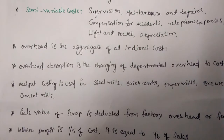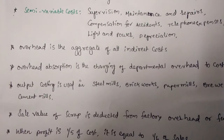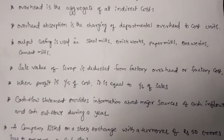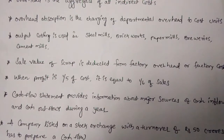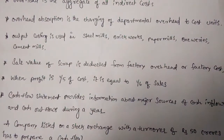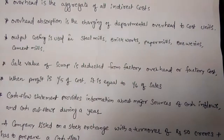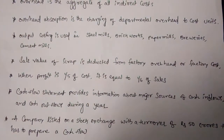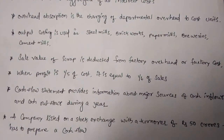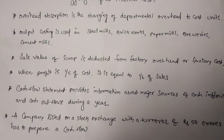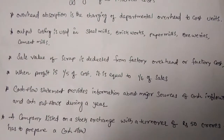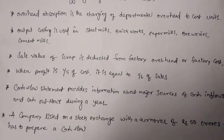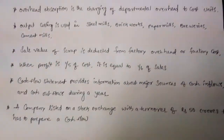Overhead: overhead is the aggregate of all indirect costs. Overhead absorption is the charging of departmental overhead to cost units. Output costing is used in steel mills, brickworks, paper mills, breweries, and cement mills.